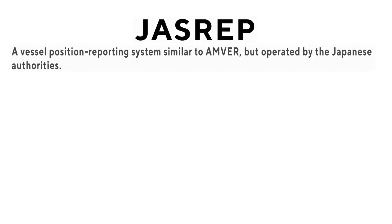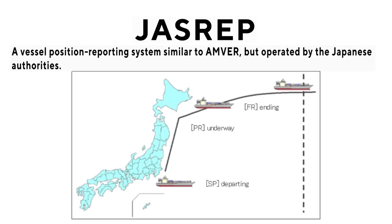JASREP: A vessel position reporting system similar to AMVER, but operated by the Japanese authorities.